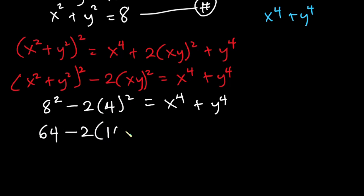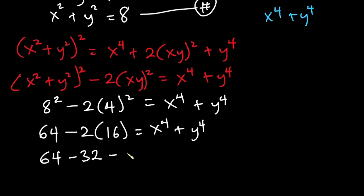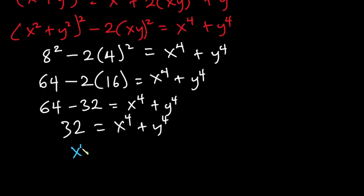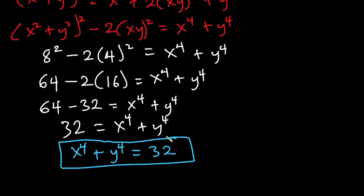8 squared is 64, minus 2 times 4 squared which is 16, so 64 minus 32 equals x to the power 4 plus y to the power 4. Therefore x to the power 4 plus y to the power 4 is equal to 32. That is our final answer. I hope you enjoyed watching this video — please give it a thumbs up and don't forget to subscribe. Thanks a lot for watching, see you again in the next video.